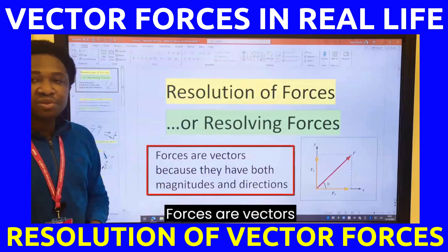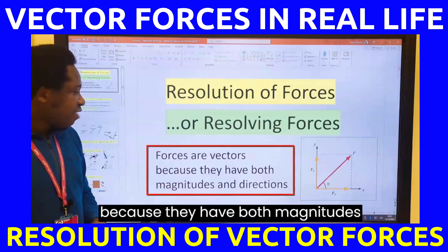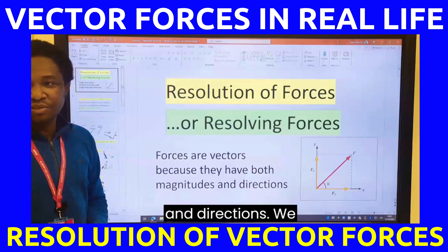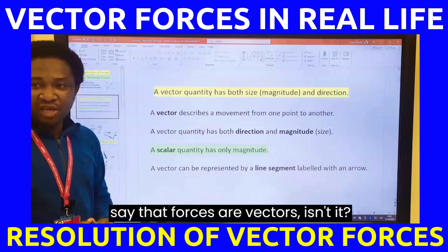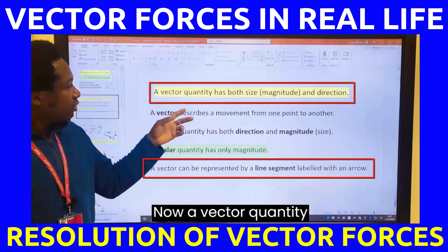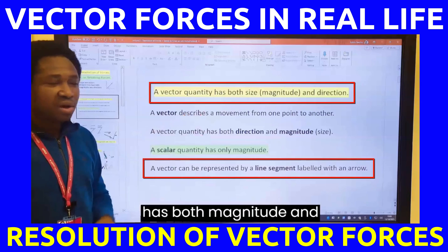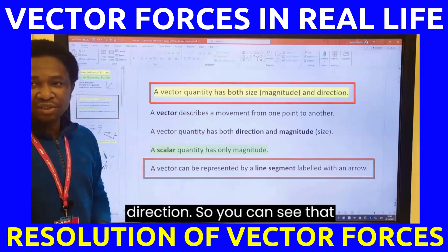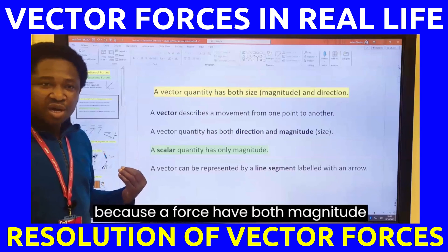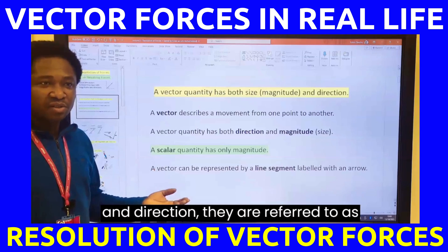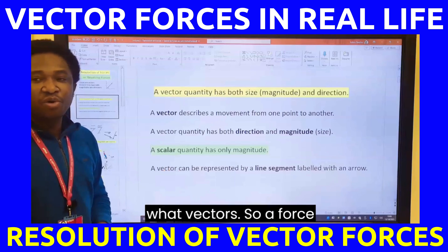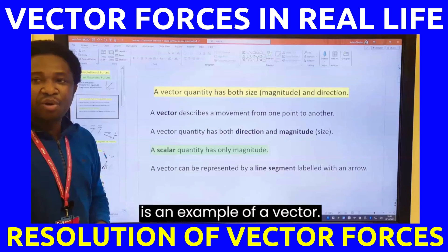Forces are vectors because they have both magnitudes and directions. We say that forces are vectors. A vector quantity has both magnitude and direction. So you can see that because a force has both magnitude and direction, they are referred to as vectors. So a force is an example of a vector.